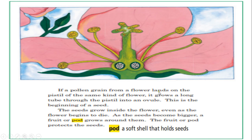If a pollen grain from a flower lands on the pistil of the same kind of flower — so if a hummingbird moved a pollen from a tulip to another tulip, then it will be a success, because it would not grow, for example, a daisy. If a pollen grain lands on the pistil of the same kind of flower, it grows a long tube through the pistil into an ovule. This is the beginning of a seed.